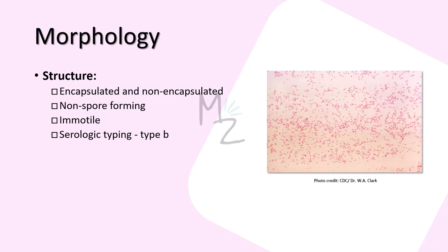Haemophilus influenzae is not responsible for forming spores. It is immotile, as it has no motility apparatus. It is one of three important encapsulated pyrogens along with pneumococcus and meningococcus. Serologic typing is based on antigenicity of the capsular polysaccharide. Of the six serotypes, from A to F, type B is the most important because it causes most of the severe and invasive diseases such as meningitis and sepsis. The incidence of these diseases has greatly reduced because the type B capsular polysaccharide is used as an immunogen in the vaccine. The type B capsule is composed of polyribitol phosphate. Unencapsulated strains cause mucosal diseases of the upper respiratory tract such as sinusitis and otitis media, but are usually non-invasive.